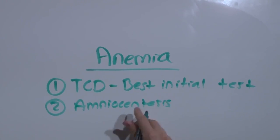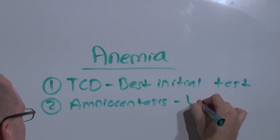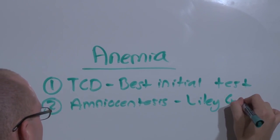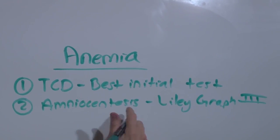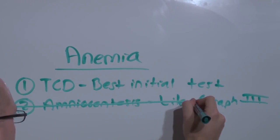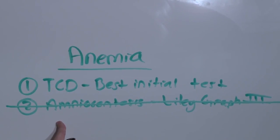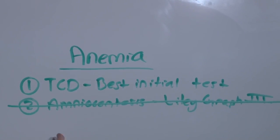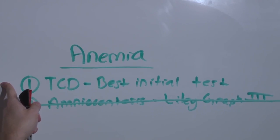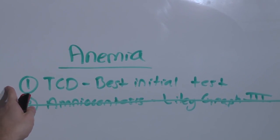You can do amniocentesis, and what you'll do is you'll plot bilirubin and albumin on a graph. And if they're Liley graph 3, then they're considered anemic. But you're not going to do amniocentesis because amniocentesis carries a risk of fetal loss. It's not that specific, and it does not provide you any access for transfusion.